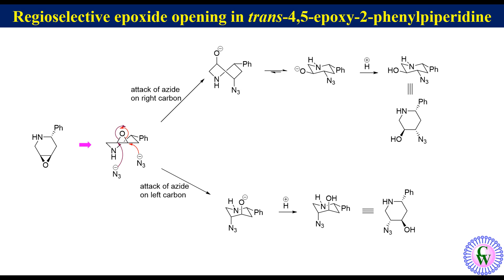Since the twist-boat conformation is very unstable, attack of azide on the right side carbon is restricted. The reaction proceeds only through attack of azide on the left side carbon, and therefore this will be the structure of the product.